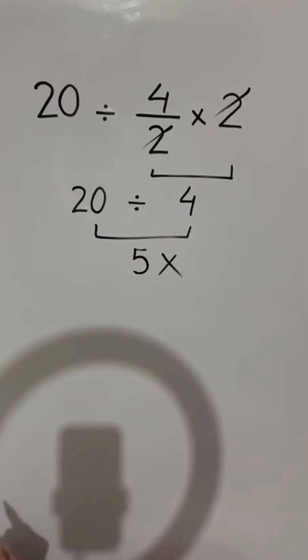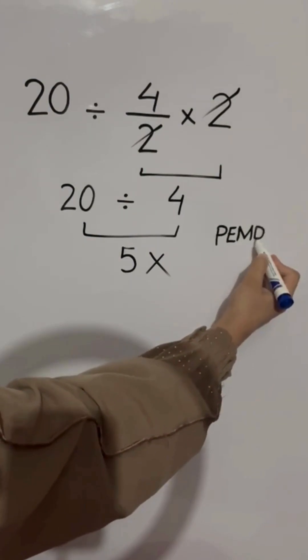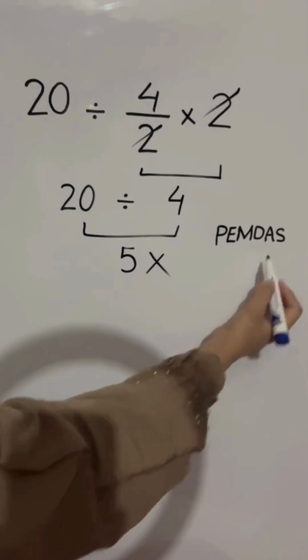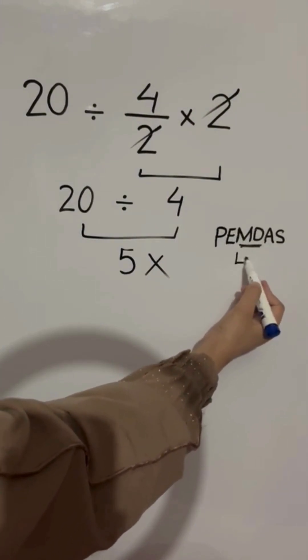But this answer is not correct, because according to the order of operations, multiplication and division have equal priority, and we have to work from left to right.